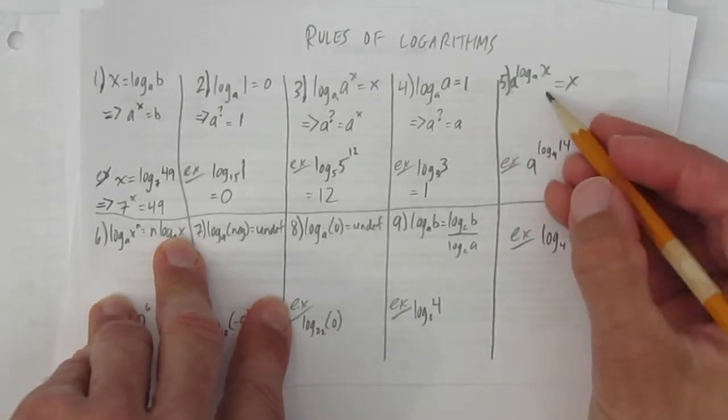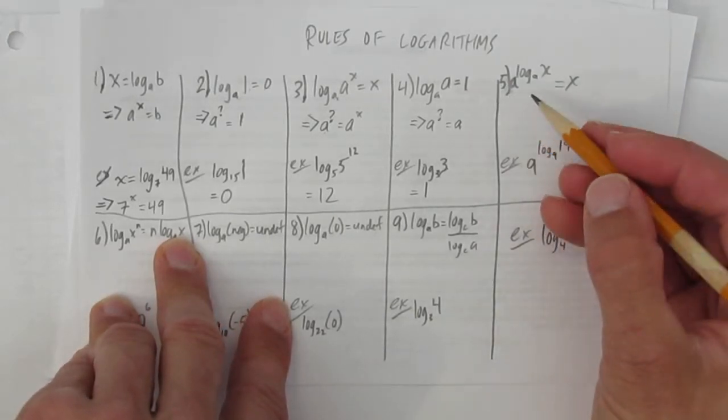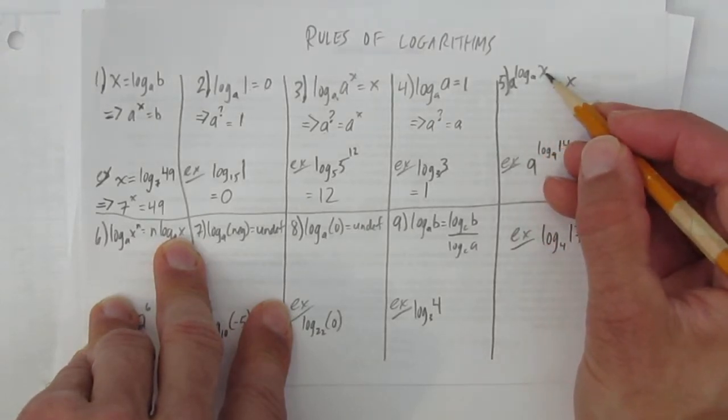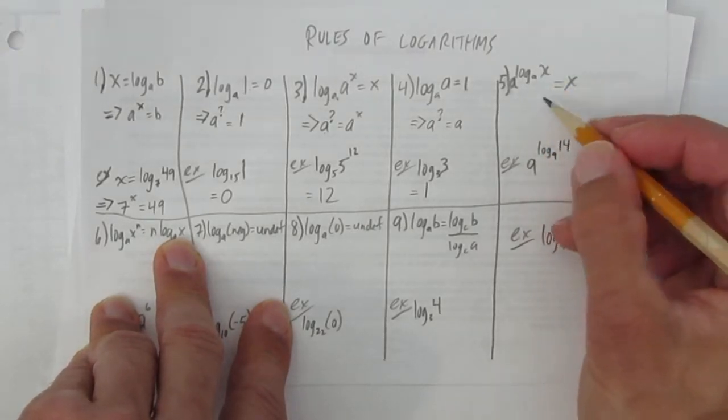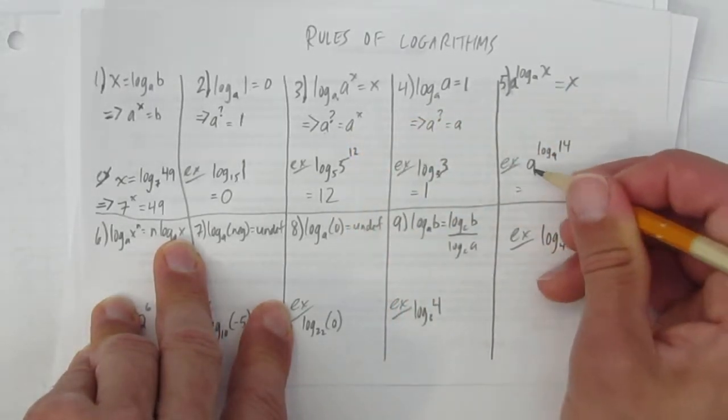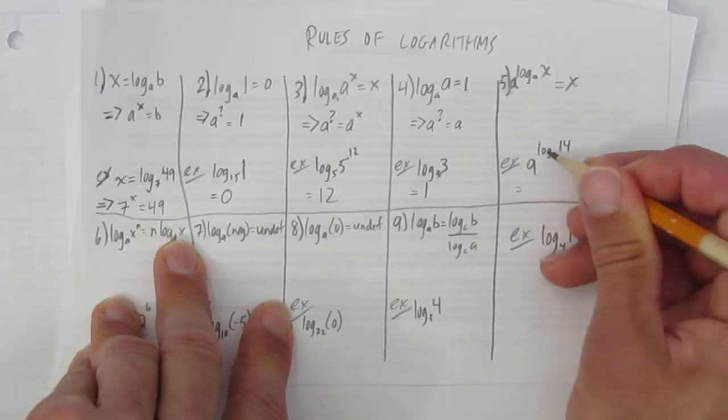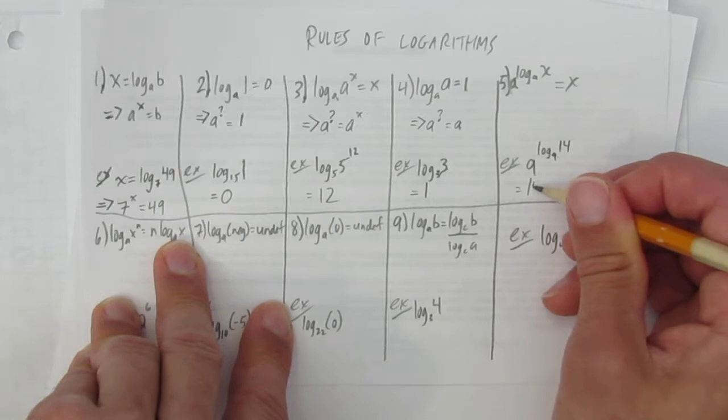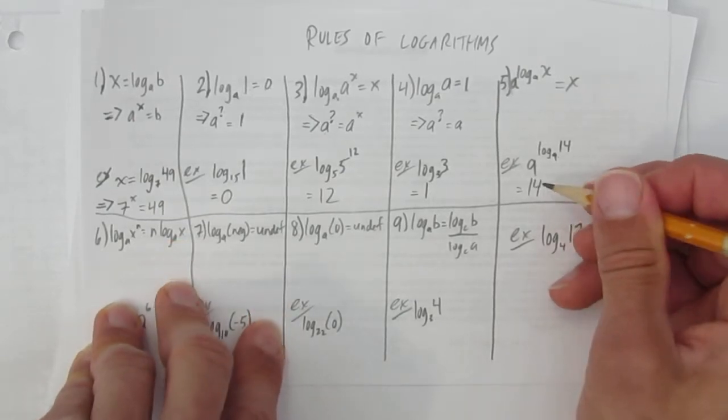Rule 5 is a lot like rule 3. If you have a base a and then you log base a of x, you get x back. I won't explain it again. It's the same sort of explanation. But here, for example, I have base 9 and then I have log base 9. Those two operations cancel out and you just get 14. That's rule 5.